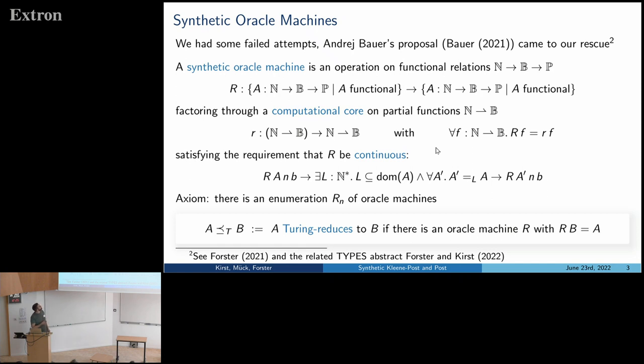Okay. So having summarized the notion of synthetic oracle machines, we can now finally define a notion of synthetic Turing reductions, which is nice to do this today because it's Turing's 110th birthday today. So happy birthday, Alan. Here's the notion of synthetic Turing reducibility. A Turing reduces to B if there's an oracle machine that on input B computes A. Okay.